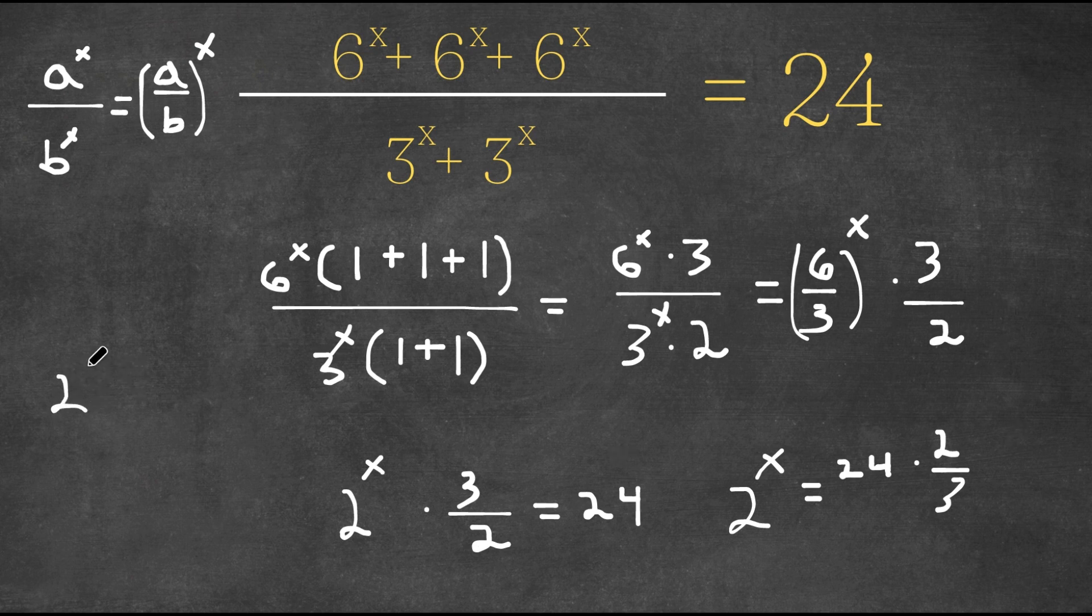So we get 2 to the power of x equals 16, and 16 is actually the same as 2 to the power of 4, meaning if 2 to the power of x equals 2 to the power of 4, x is equal to 4.